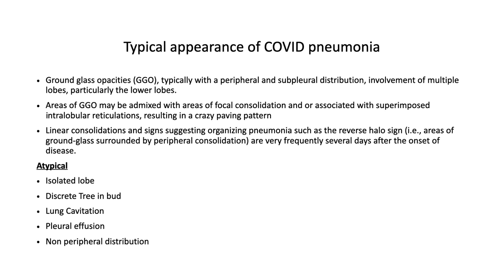Take-home messages: the typical appearance of COVID-19 pneumonia includes ground glass opacities with peripheral and subpleural distribution, involvement of multiple lobes particularly the lower lobes, areas of ground glass opacities admixed with focal consolidation with air bronchogram pattern, superimposed intralobular reticulations — crazy paving pattern — linear consolidations, and signs suggesting organizing pneumonia such as the reverse halo sign. Atypical presentations include single lobe, unilateral isolated lobe, discrete tree-in-bud, cavitation, effusion, and non-peripheral distribution.